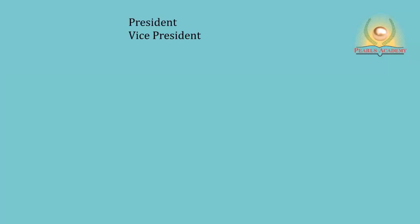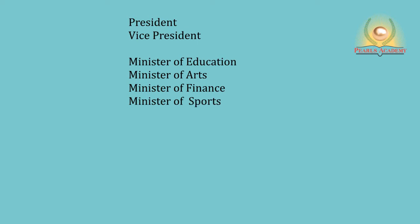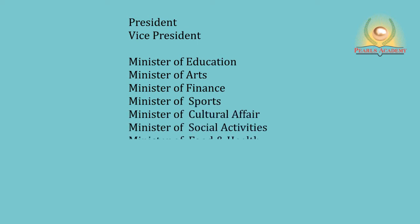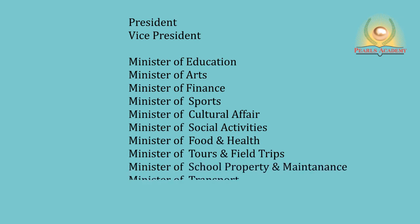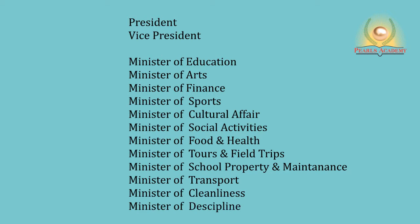The Pearls Academy Students' Parliament comprised of a President and Vice President, along with a cabinet of 12 ministers: Minister of Education, Arts, Finance, Sports, Cultural Affairs, Social Activities, Food and Health, Tours and Field Trips, School Property and Maintenance, Transport, and Cleanliness and Discipline.